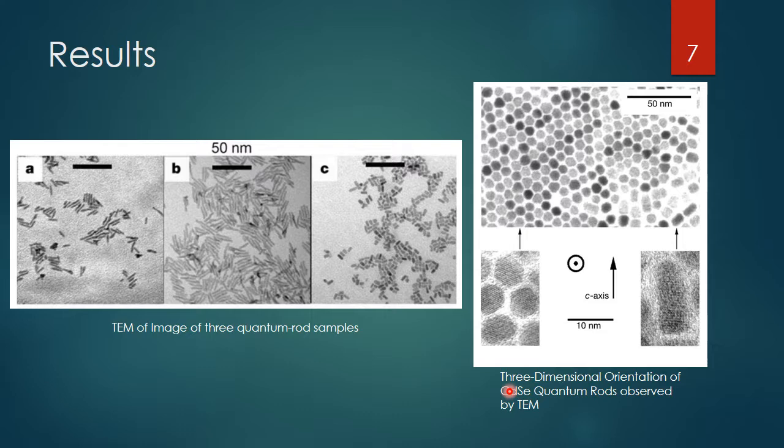On the right there are more TEM images of the quantum rods, but these images are oriented the other way. They took the rods and turned them so you can look down the C-axis.